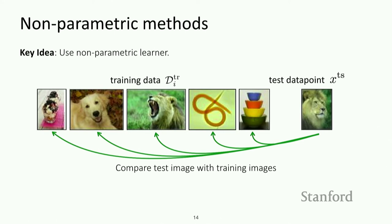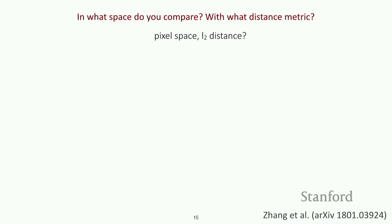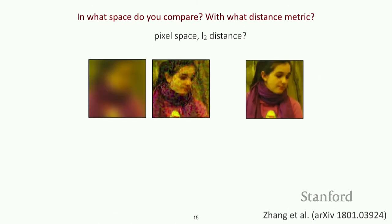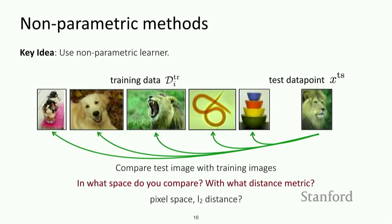The key question that comes up is: with what metric do you compare your test image to your training image? Without meta-learning, you might use L2 distance between data points. Unfortunately, with images, L2 distance works very poorly. For example, if you take a query image and compare it with two other images, L2 distance may return the perceptually wrong one. The key idea of these methods is to instead learn how to compare using your meta-training data, in a way that is effective for new tasks.